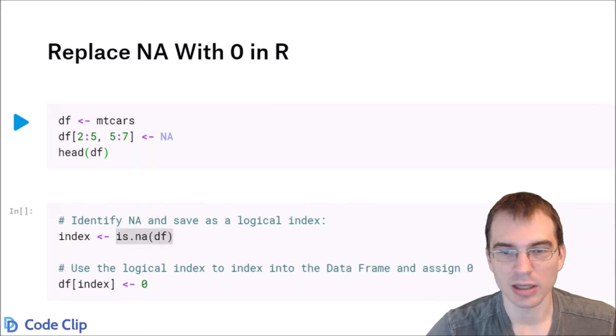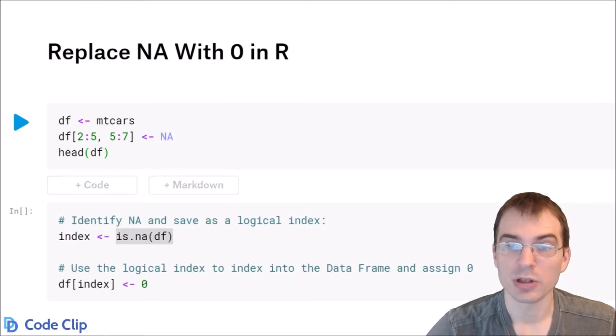If you're working with a data set and you discover it has NA values, you often have to do something with those values, either remove them or fill them in with a different value before you can use certain functions because a lot of functions aren't going to work with NA values. In this video we're going to learn how to replace NA values with zero.